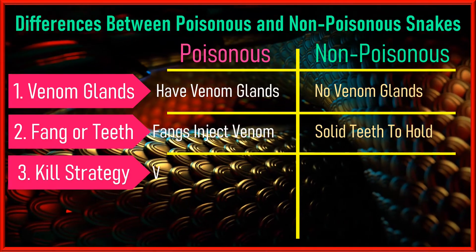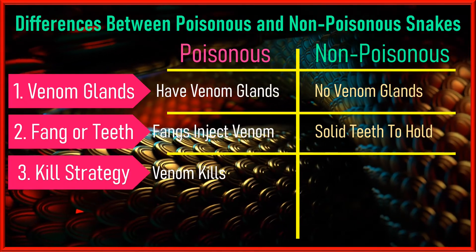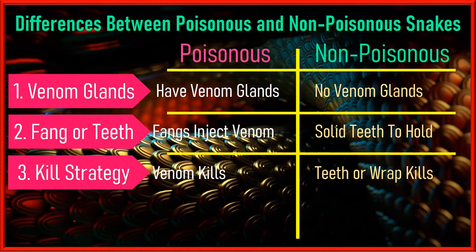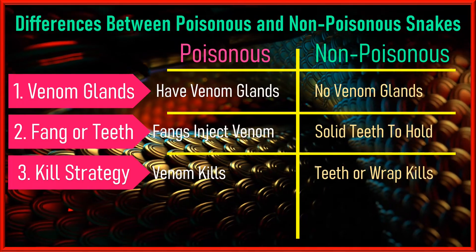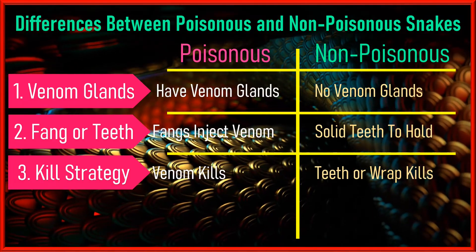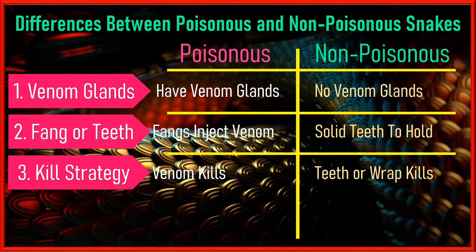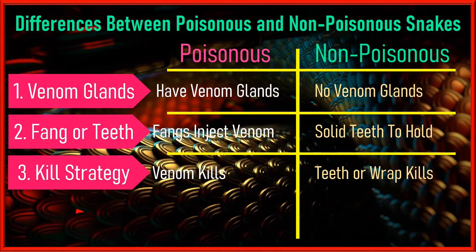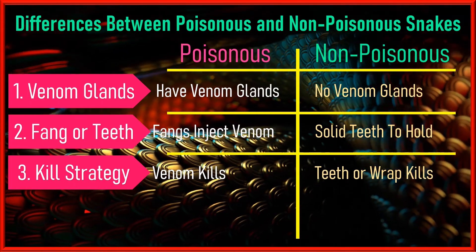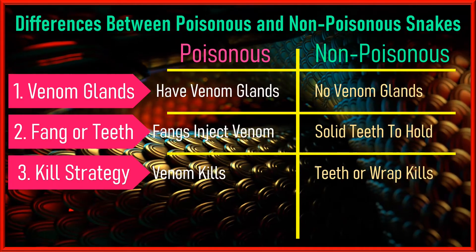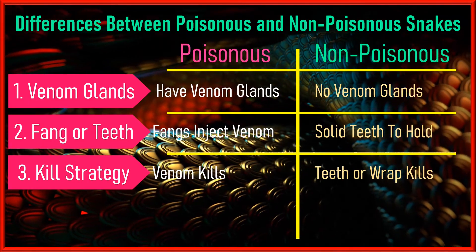Third, killing strategy: venomous snakes use venom to kill the prey. When injected into the body, venom clots the blood and the prey usually dies of blockage in veins. Non-venomous snakes hold the prey with teeth and jaws, then wrap their body around it to apply pressure, stopping its breathing to kill it before engulfing.